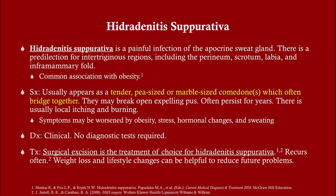This usually appears as a tender pea-sized or marble-sized dome-shaped cyst. You often have many of them and they can bridge together. If they break, there will be pus — these are abscesses. They persist for a long period of time and don't go away on their own, so they need to be managed medically or surgically. It is symptomatic — painful and burning. The diagnosis is clinical.